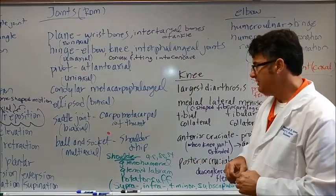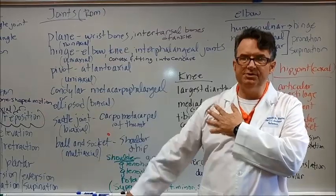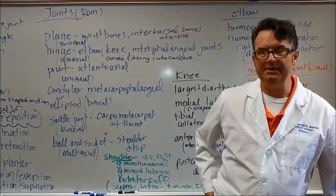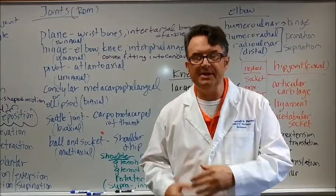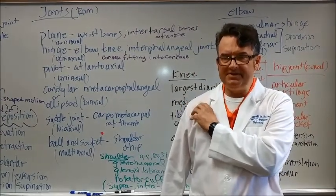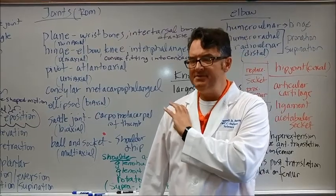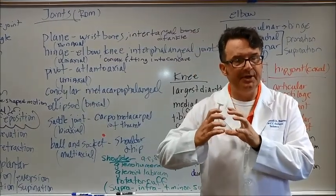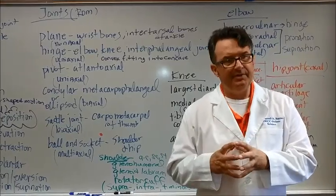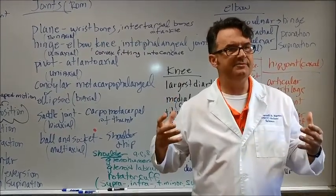A ball and socket is multi-axial. We're talking about the shoulder joint and we're talking about the hip joint. Remember that the shoulder joint is heavily reinforced by muscle. There is a tiny glenoid fossa that is built up with a glenoid labrum so that the head of the humerus has somewhere to go.